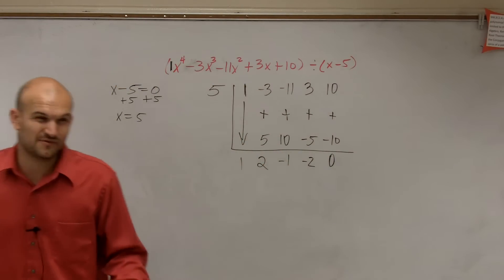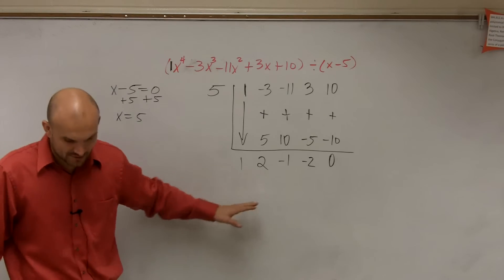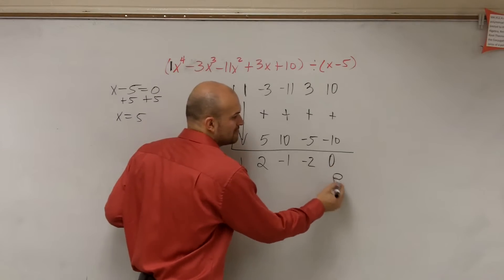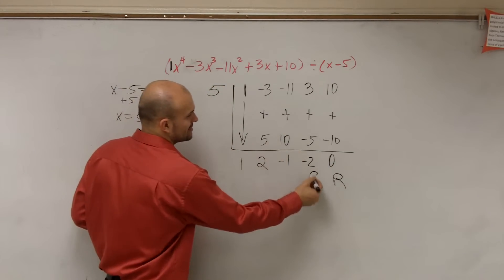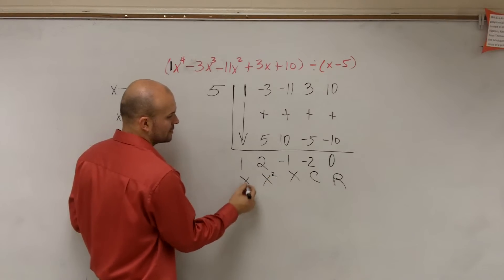Now this is where a lot of you got confused when you made this mistake. So the next thing, guys, remember when we're doing this, the last answer that you get is your remainder. Then we go from remainder to constant to linear to quadratic to cubic.